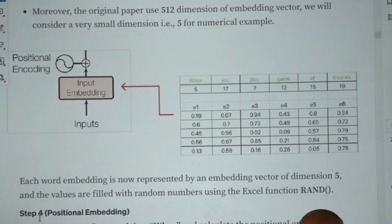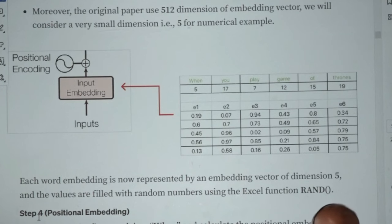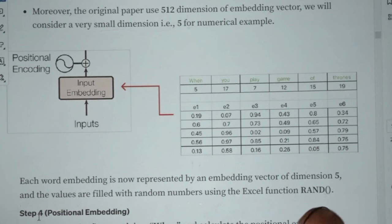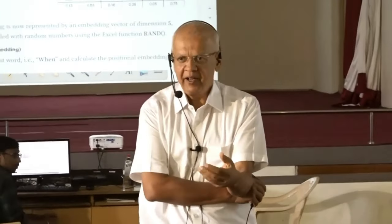Every word in a sentence has a position. Somehow the word has to be given a positional encoding — it is not just what the word vector is, but what its position is in the sentence, and that has to be encoded in the vector. So how do you go about encoding the positional status of a word in a vector?